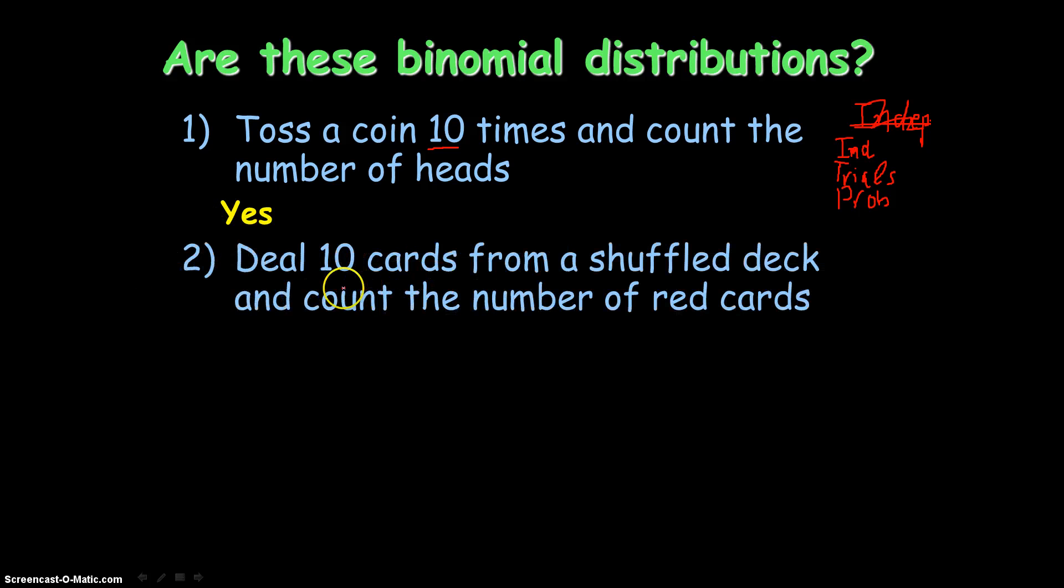Let's try another one. Deal ten cards from a shuffle deck and count the number of red cards. Well, we don't have a fixed number of trials, do we? It doesn't say we're going to do this a certain number of times. So already we can rule out that it's not a binomial distribution. But furthermore, if you were to shuffle a deck of red cards, there's no way you could say how many red cards you could get each time. So you can't really say this is success or fail, nor does the probability of red cards in the hand you draw remain the same each time. So we can't call it binomial.